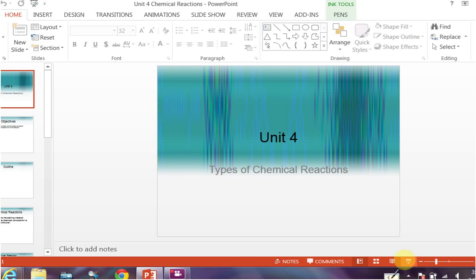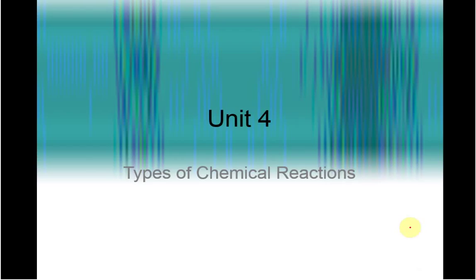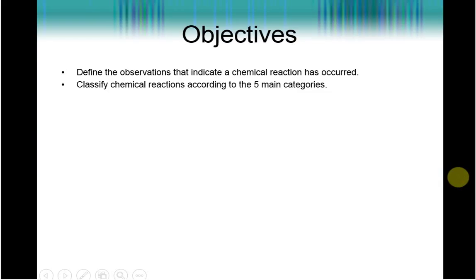Okay, so here we have unit 4. We're going to begin this unit with a discussion of the types of chemical reactions. For this section of unit 4, we're only going to deal with two objectives. The first is we're going to look at how you know a chemical reaction has taken place, and then we're going to categorize chemical reactions according to five main types.